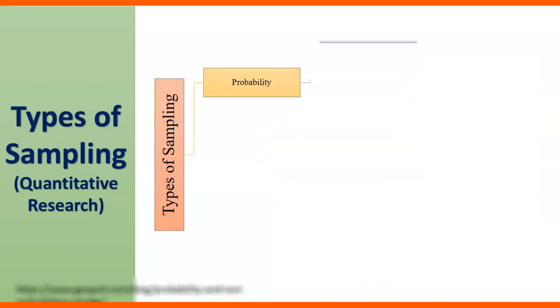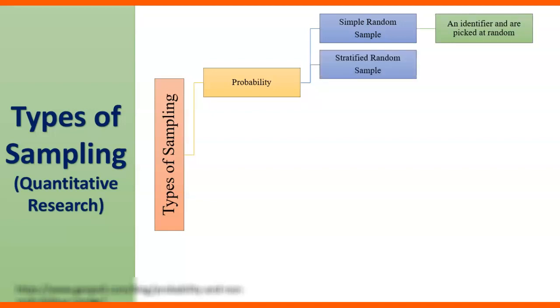Types of sampling probability. Simple random sample and you will find an identifier and you will pick randomly. Then stratified random sample. It includes subgroups for simple random sampling. Stratified means subgroups.